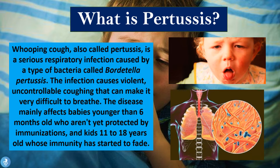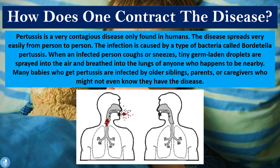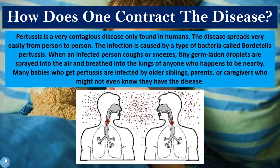So let's take a closer look at how one can contract this disease. Pertussis is a very contagious disease and it's only found in humans — the disease spreads very easily from person to person. When an infected person coughs or sneezes, tiny germ-laden droplets are sprayed into the air and breathed into the lungs of anyone who happens to be nearby. Many babies who get pertussis are infected by older siblings, parents, or caregivers who may not have known they even had the disease.